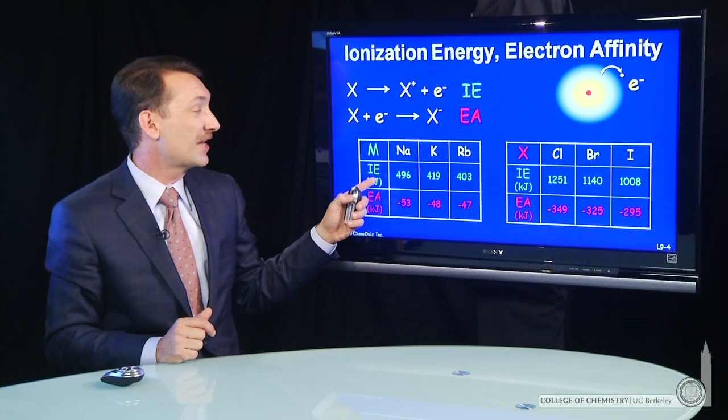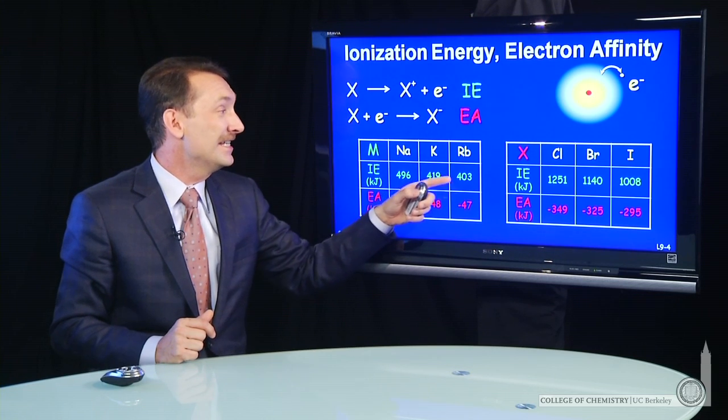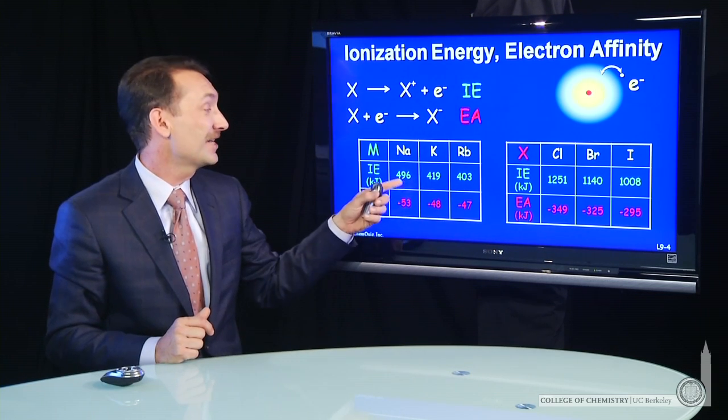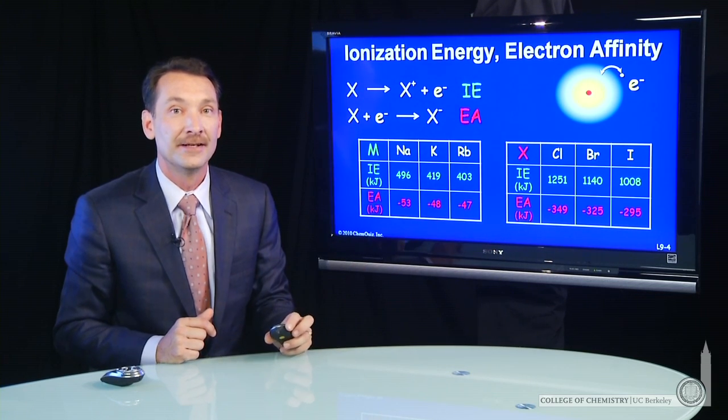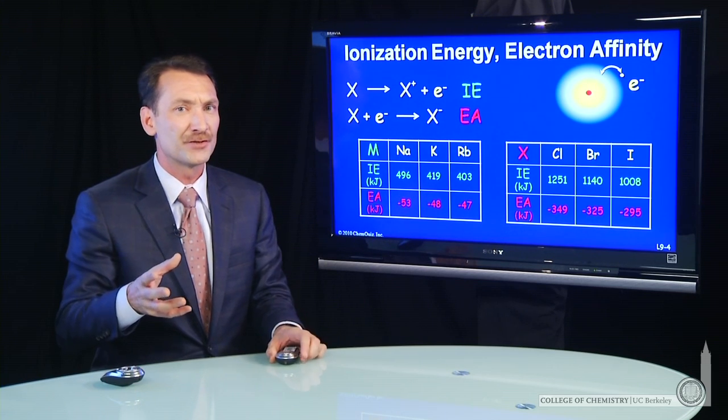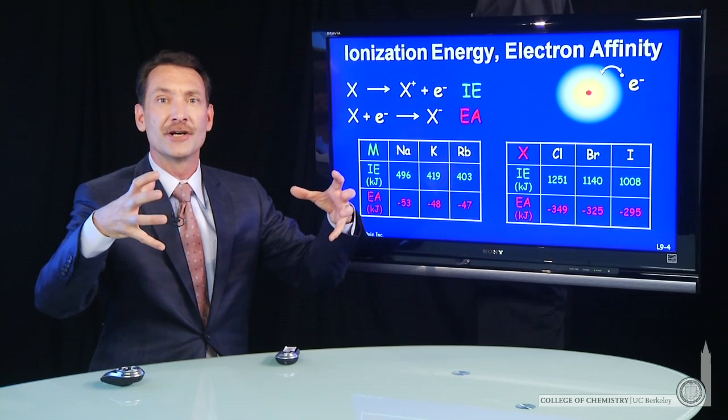So the trend as I go down the column is it's getting easier to ionize. The ionization energy is decreasing. And that's pretty easy to understand, because what I'm doing is going to bigger and bigger atoms.